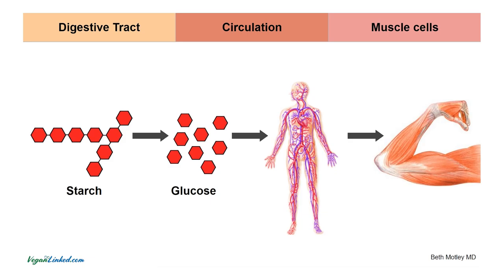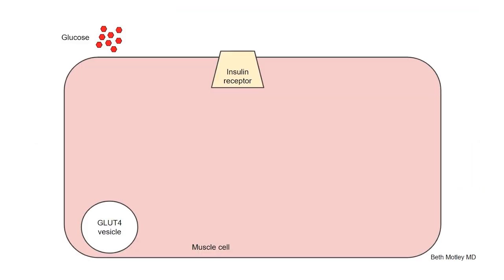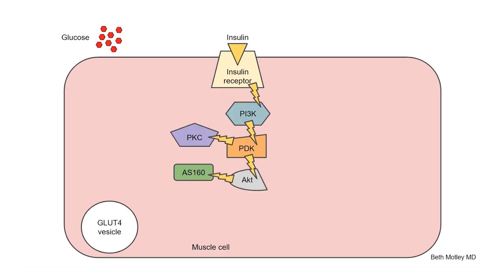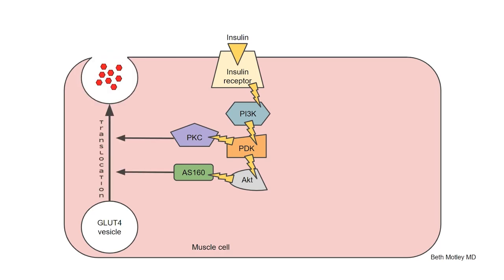Let's zoom in and look at that muscle cell and exactly how we store the glucose — the sugar — in the muscle cell. Up top, we have our insulin receptor. Down at the bottom, we have our glucose vesicle that's waiting to pick up the glucose hanging out outside the cell in the bloodstream. Insulin is our key. It unlocks the door, signals the insulin receptor, which signals all of these downstream enzymes that together allow the glucose vesicle to move to the edge and invite glucose into the cell. That is how a happy cell should work.